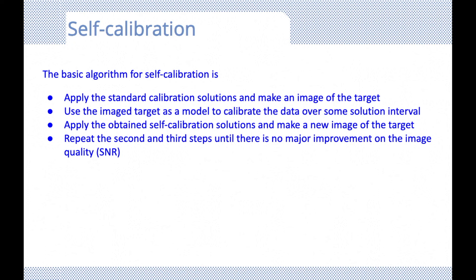To correct for residual errors, we use a technique called self-calibration. Self-calibration helps to correct for residual amplitude and phase errors, as well as some direction-dependent effects. Ben will explain self-calibration in more detail in following presentations, but the basic algorithm is: calculate your antenna-based standard calibration solutions, apply them to your target, and make your first image. Using this image, derive a model, then use that model to calibrate your data again using some solution interval. Reapply the obtained self-calibration solutions, make a new image, get a new model, and continue this calibration-reimaging cycle until you no longer see an improvement in signal-to-noise.